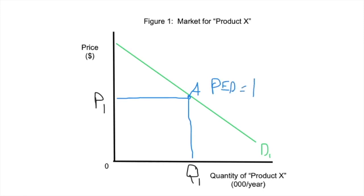That is the unit elastic part of the demand curve. Did we just kind of make that up? Yeah, kind of. But what that says is that at this point, the percentage change in the price is equal to the percentage change of the quantity demanded.